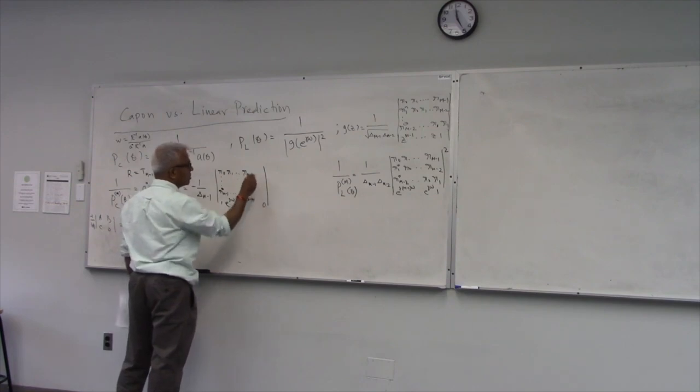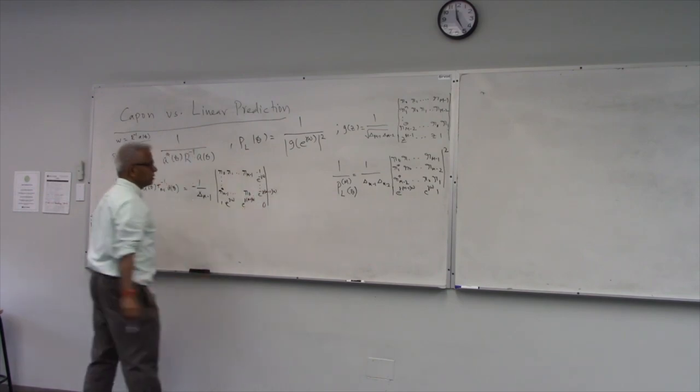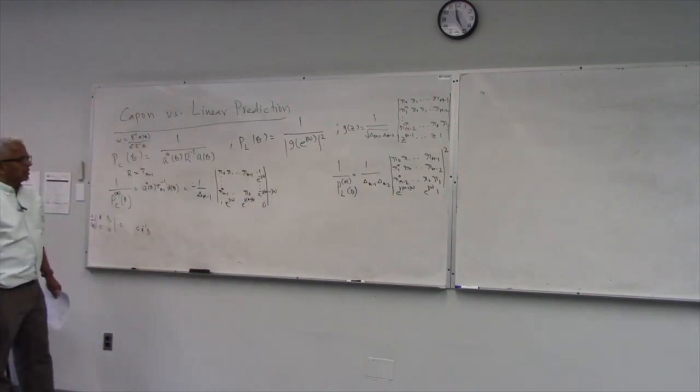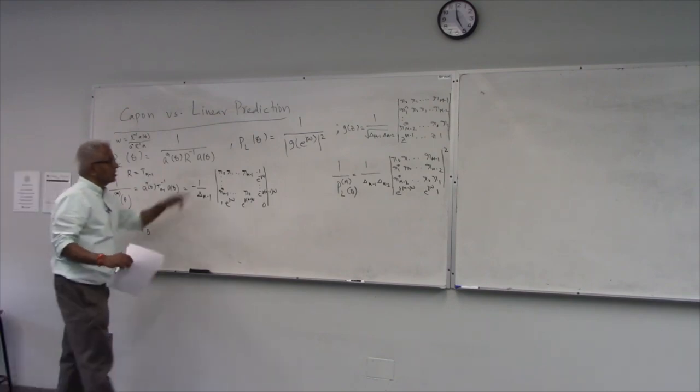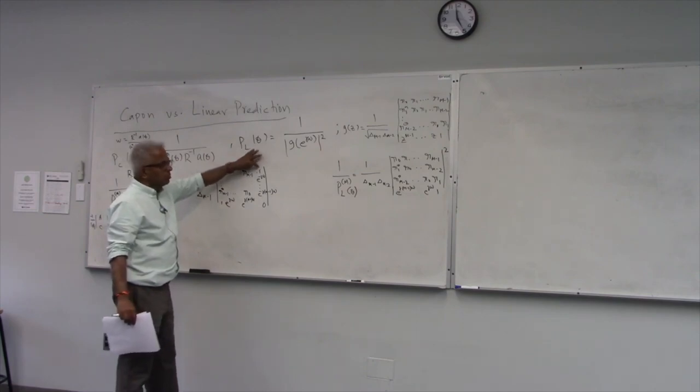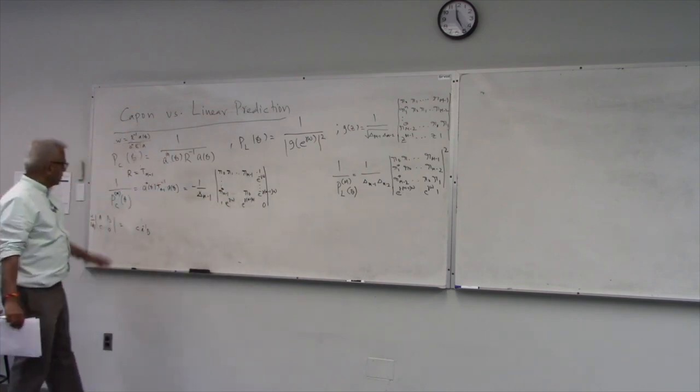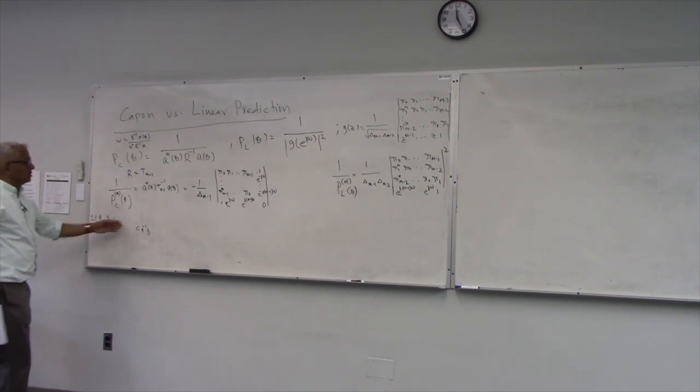And C is what? C is the steering vector, right? So this is e raised to 1 e to the power j omega, etc., e to the power j m minus 1 omega. Here 1 e raised to minus j omega, etc., e raised to minus j m minus 1 omega. Yes, everybody is at least, right? You see the size? 1 to m rows or m columns, m plus 1 columns. So it's a square matrix. So we took care of everything.